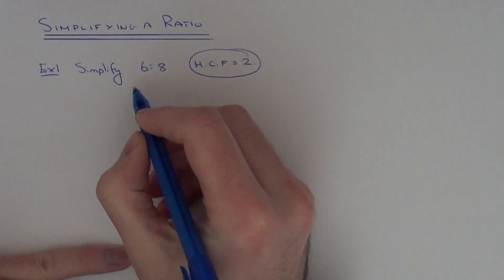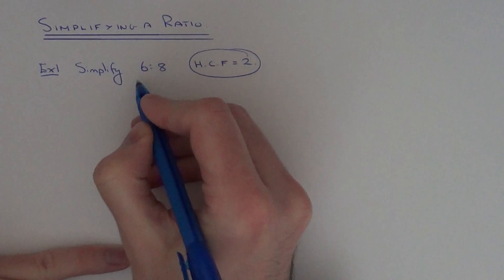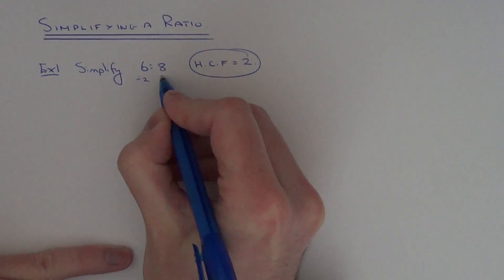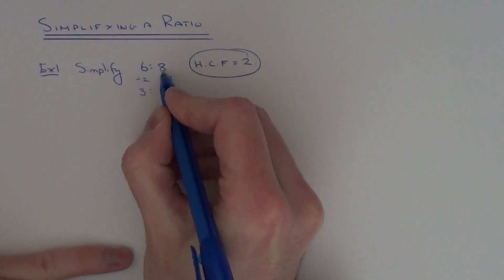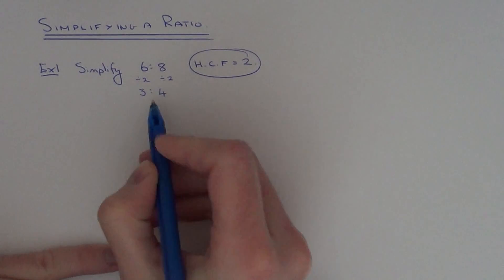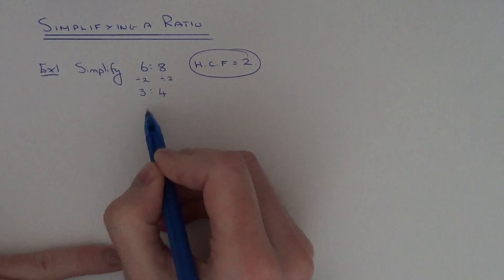So all we need to do is divide both sides of the ratio by 2. So 6 divided by 2 is 3, 8 divided by 2 is 4. So this is our final answer because it cannot be simplified any further.